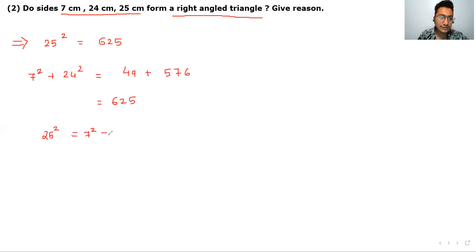25 square is equal to 625 and remaining two sides is 7 square plus 24 square is equal to 49 plus 576, which equals 625. By converse of Pythagoras theorem, you can do this. Yes.